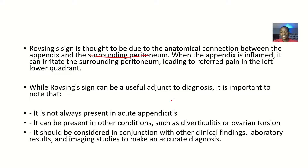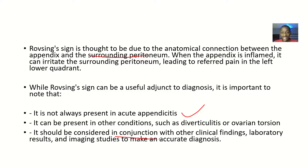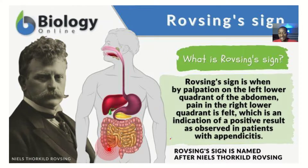While the Rovsing sign can be a useful adjunct in diagnosis, it is important to know that it is not always present in acute appendicitis, though most of the time it is. In medicine, we don't like to say never, so anything can happen. It can also be present in other conditions such as diverticulitis or ovarian torsion. It should be considered in conjunction with other clinical findings, laboratory results, and imaging studies to make an accurate diagnosis of acute appendicitis.